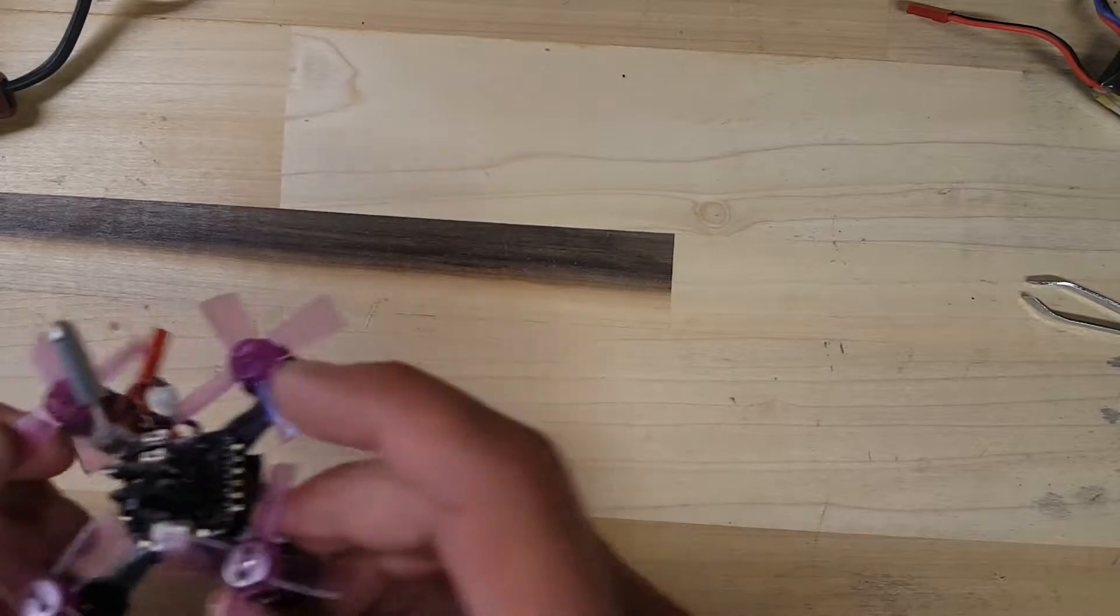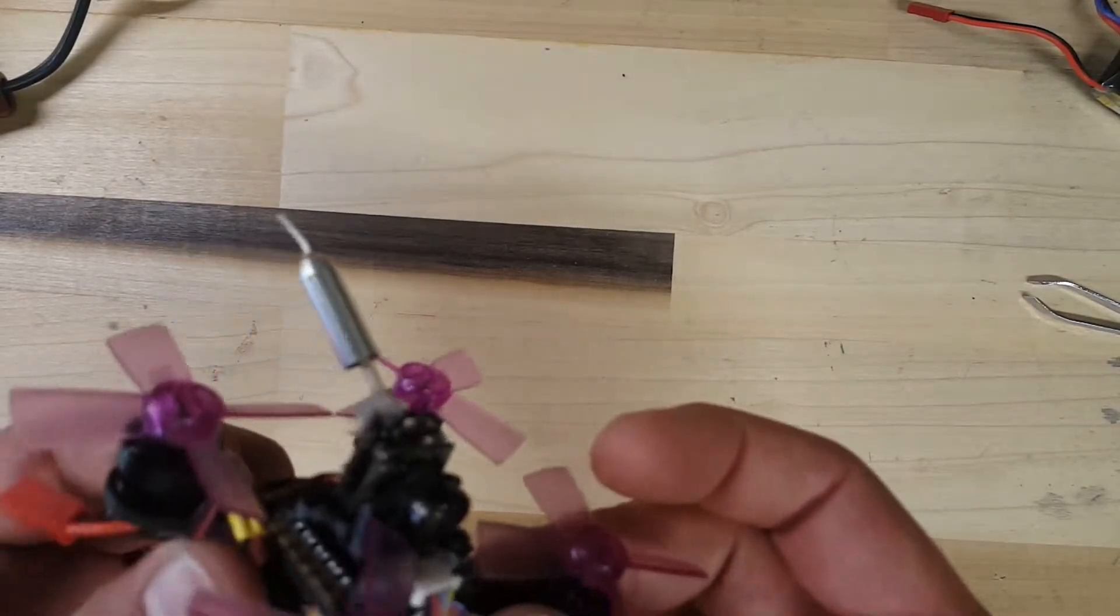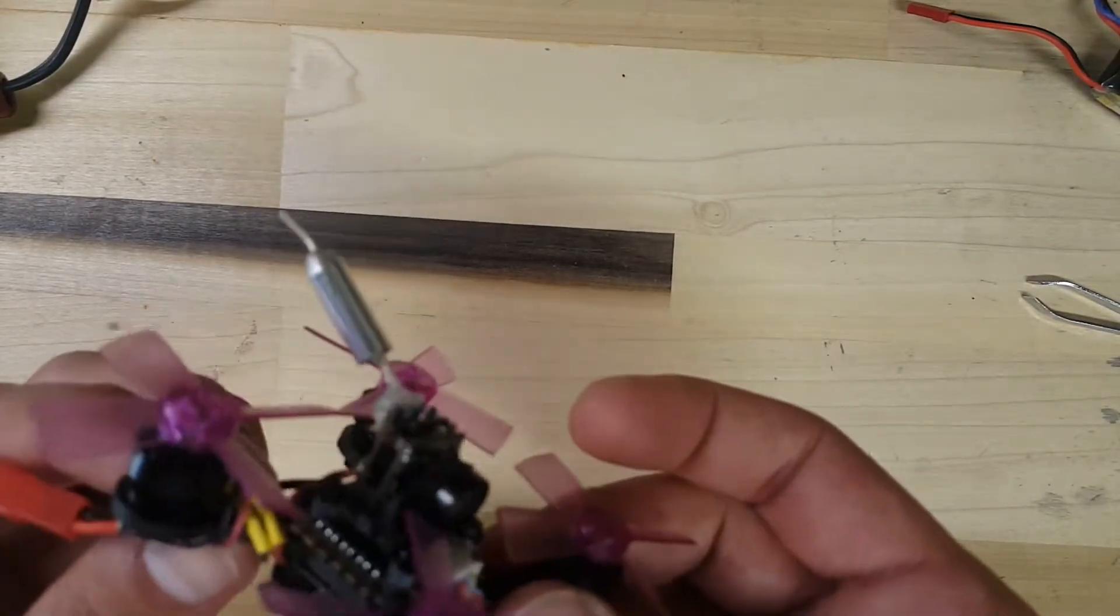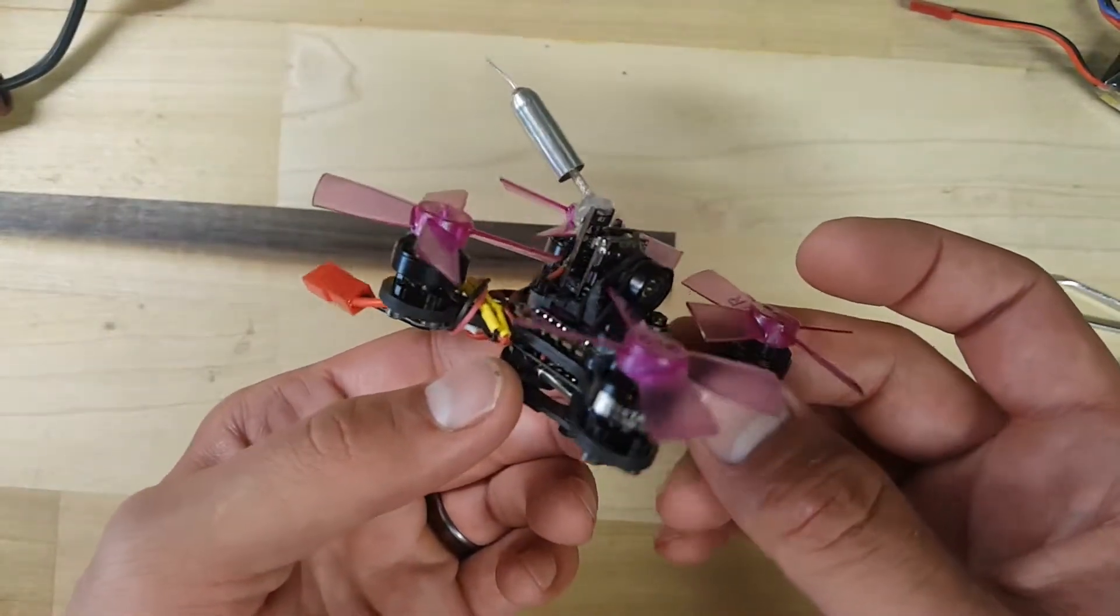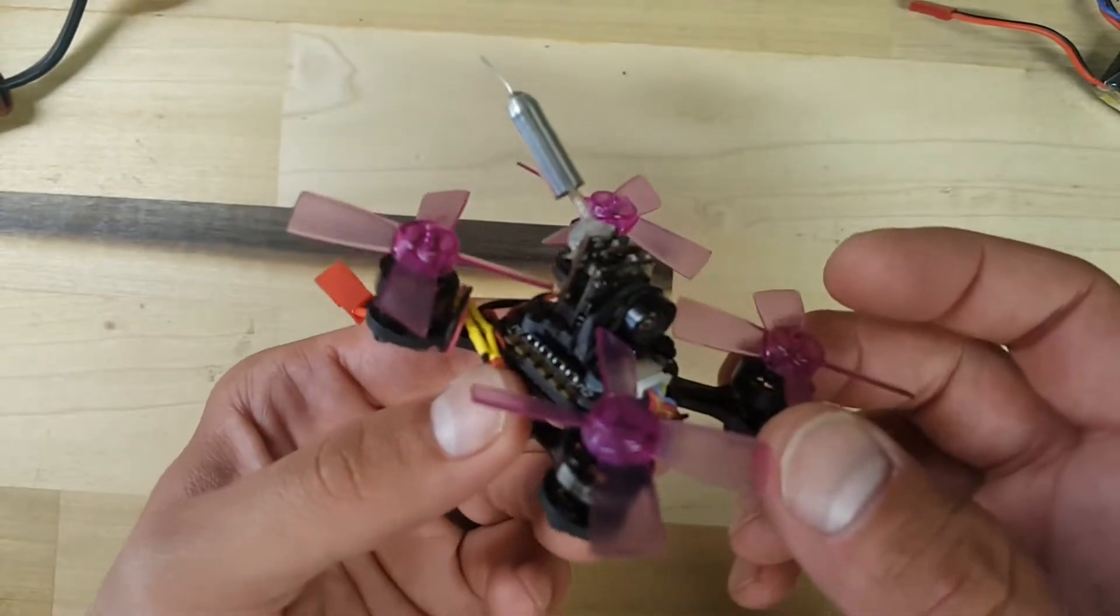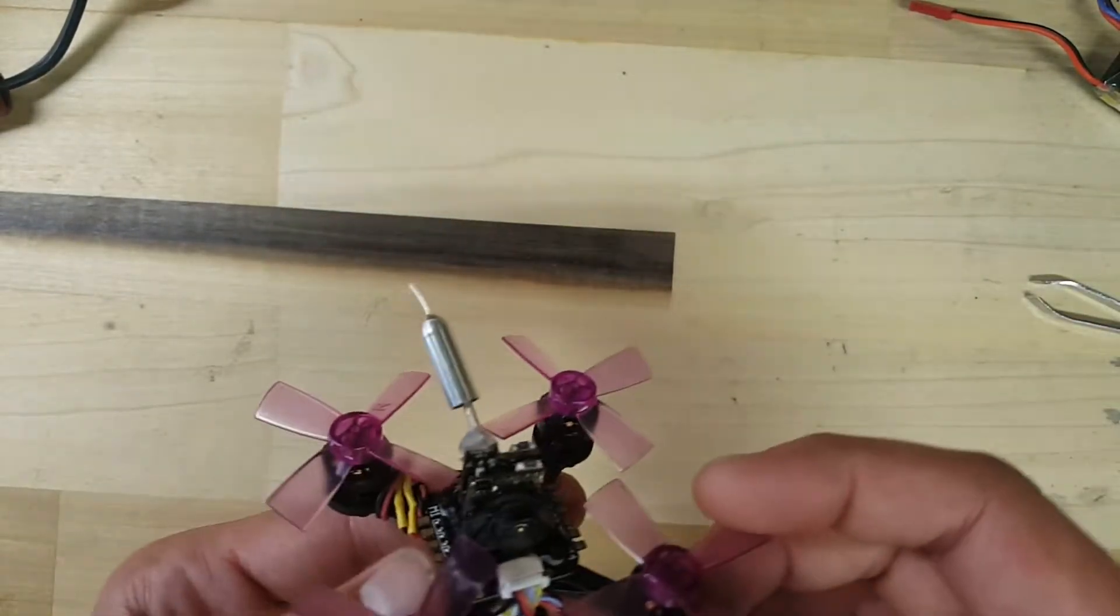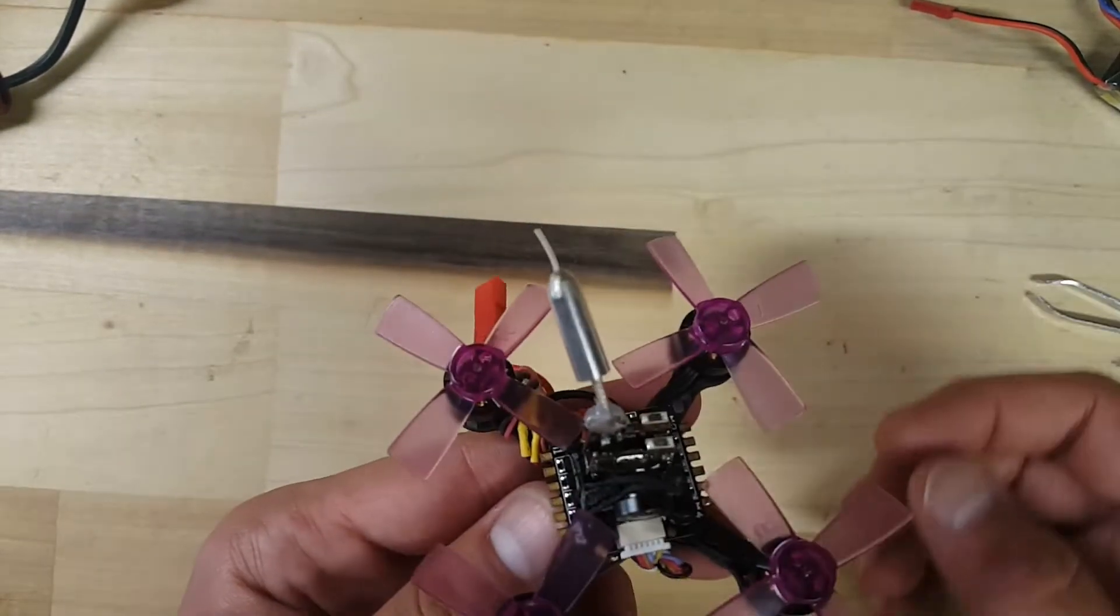BetaFlight configuration was also really easy. I'm running stock PIDs and everything. I haven't done any tuning to this yet. It's rated for 3 minutes and 30 seconds flight time with the prop guards and about 5 minutes without.